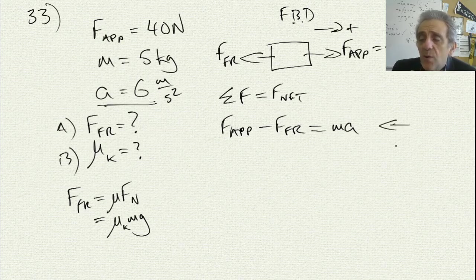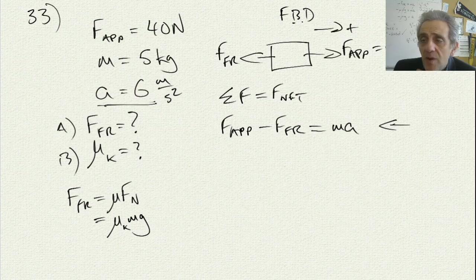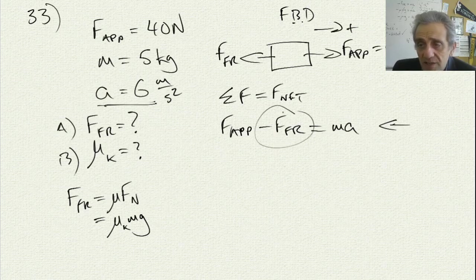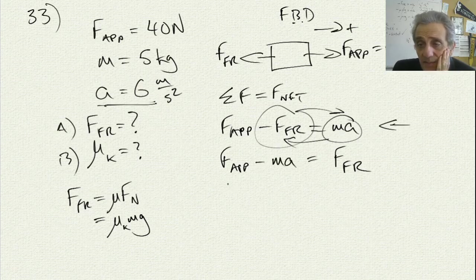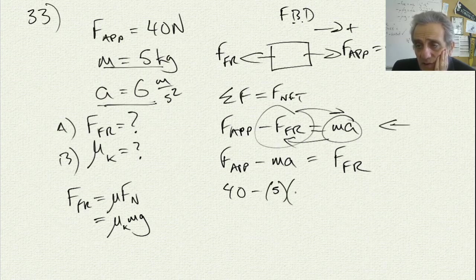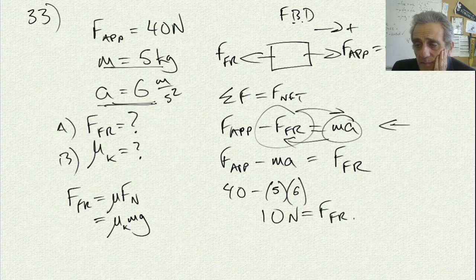I know m, I know a, and I know the applied force — there's only one unknown, and that's friction. Rearranging: applied force minus ma equals friction. Plugging in values: 40 minus 5 times 6 — that's 40 minus 30 — equals 10. So 10 newtons is my friction force. Part A is solved.